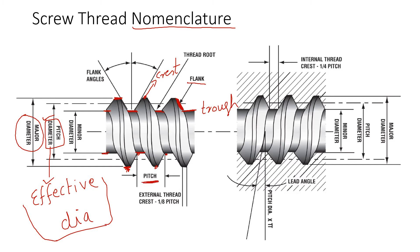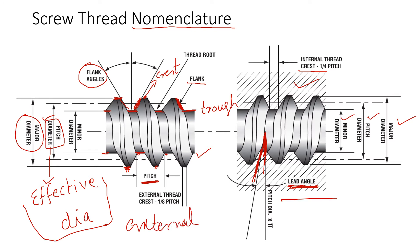These nomenclatures also apply to internal threads. There is a flank angle — the total angle that the two flanks make between each other. The lead angle is between the point where the thread starts and the angle the flank makes; it represents the angle the thread covers in one full rotation. Section lines on a drawing indicate an internal thread, while an external thread has no such section lines.